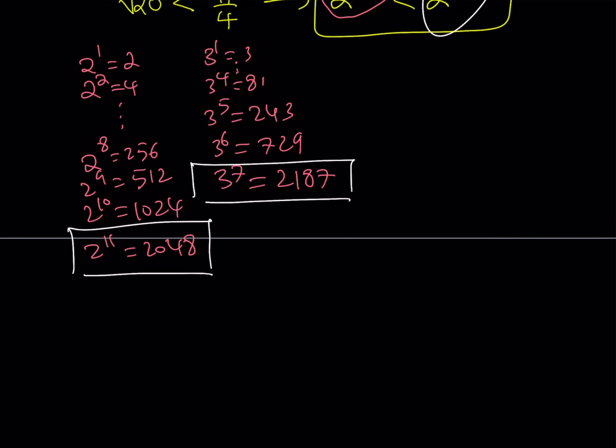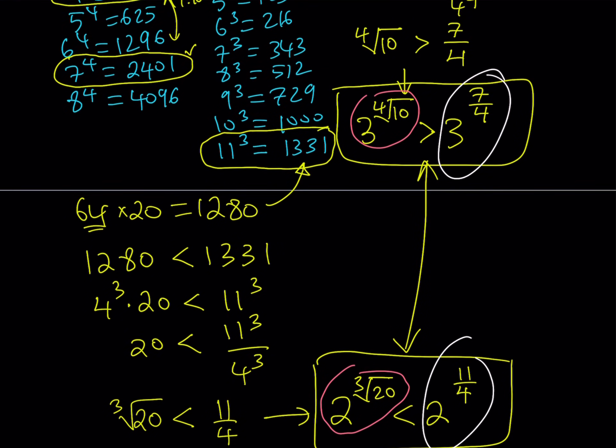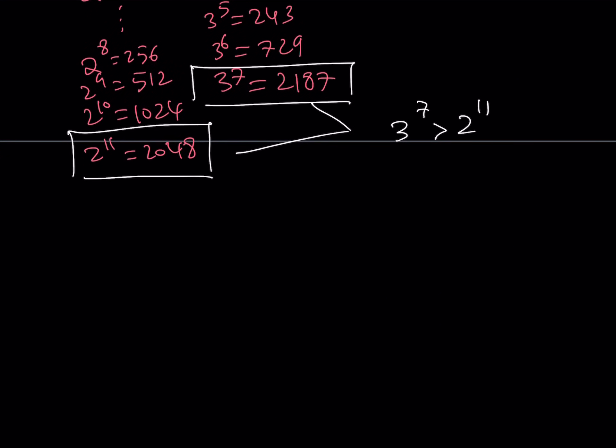We can safely say that 3 to the 7th power is greater than 2 to the 11th power. But notice that we have 11/4 and 7/4. So, why don't we just raise both sides to the power 1/4 or take the fourth root of both sides. This gives us 3 to the power 7/4 is greater than 2 to the power 11/4. Wow, that's amazing, isn't it?